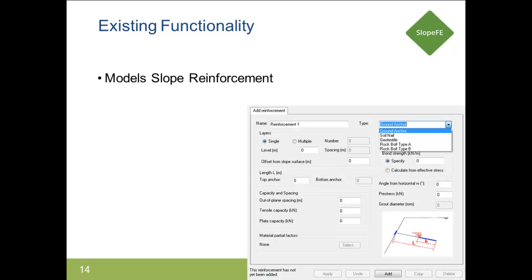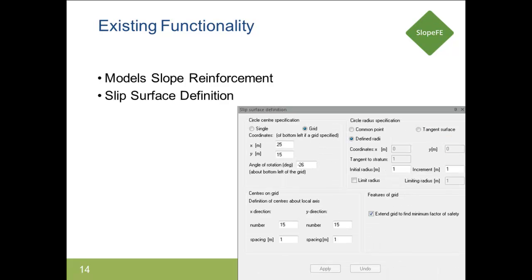In terms of existing functionality, with the limit equilibrium method as OASIS slope users may be aware, we've got slope reinforcement that can be applied within SlopeFE — ground anchors, soil nails, geotextiles, and rock bolts. Slip surfaces can be defined, so if you're looking at a pre-existing failure you can apply a single slip circle, or alternatively look for the worst case slip circle using a grid. You can also plot multiple slip circles and look at the details in the tabular output.